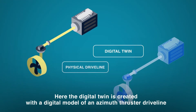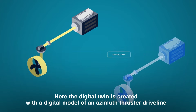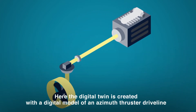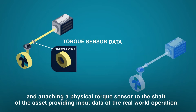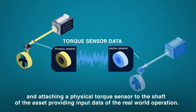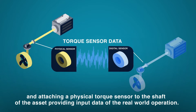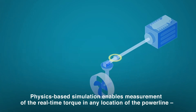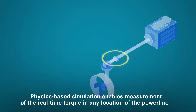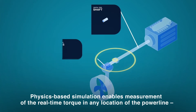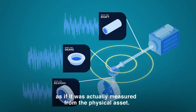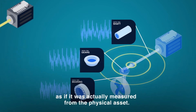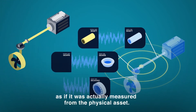Here, the Digital Twin is created with a digital model of an azimuth thruster driveline and attaching a physical torque sensor to the shaft of the asset, providing input data of real-world operation. Physics-based simulation enables measurement of the real-time torque in any location of the power line as if it was actually measured from the physical asset.